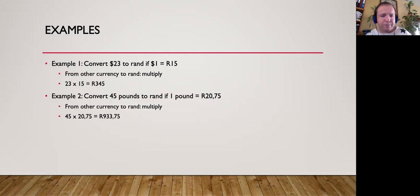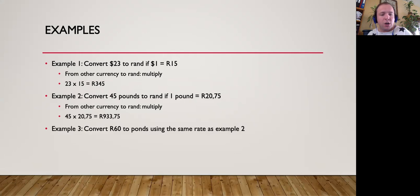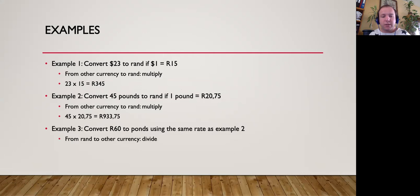Now we've dealt with going from another currency to rand. Let's look at an example going from rand to another currency. Convert 60 rand to pounds using the same rate. We're going from rand to pounds — when going from rand to a stronger currency, we divide. So 60 rand divided by 20.75 gives you an answer of 2.89 pounds.